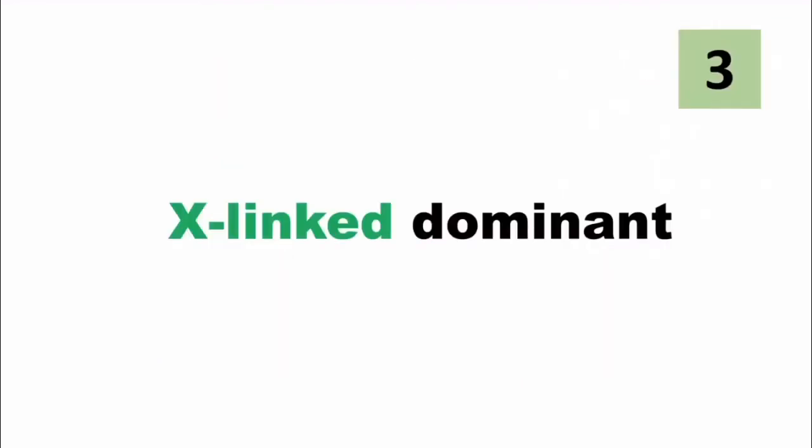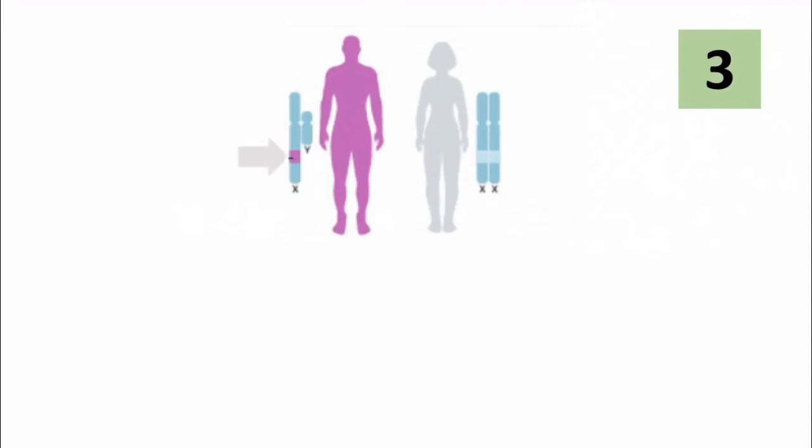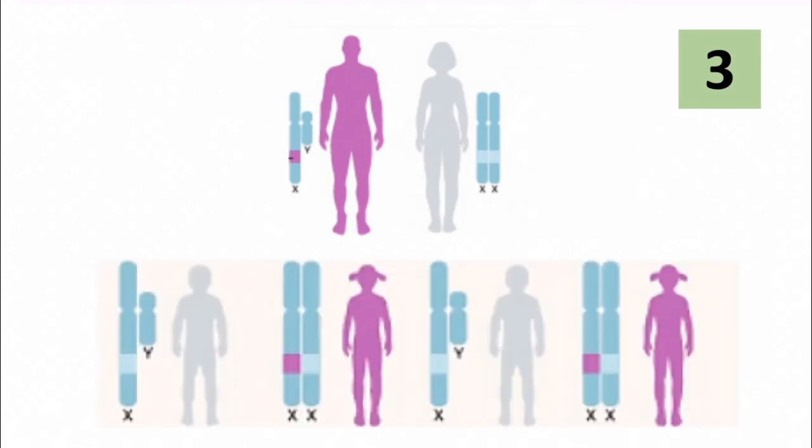Now, come to our next category, X-linked dominant inheritance. In this picture, you can see father has got the mutation in the dominant gene of X chromosome. What is the probability of being affected among his offspring? Here, we need to consider two things. Number one, dominant gene will always express. Another is sons do not receive X chromosome from father.